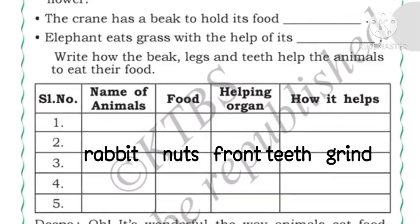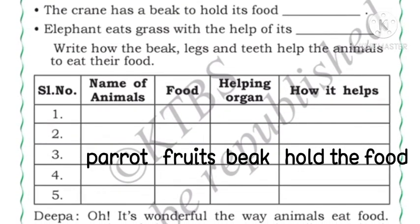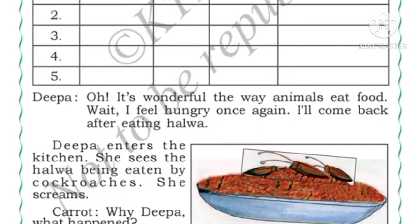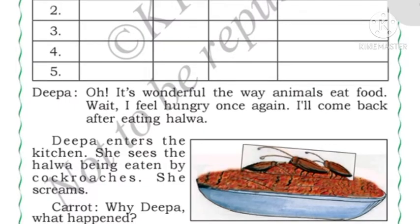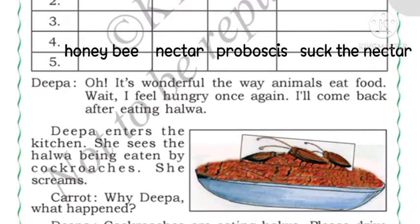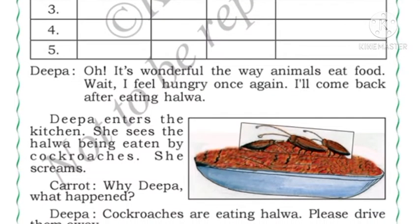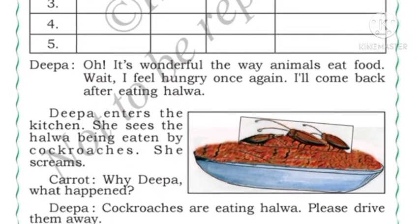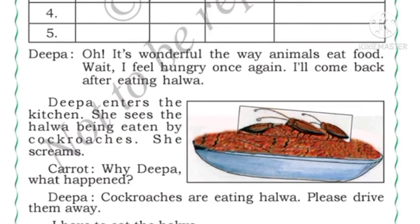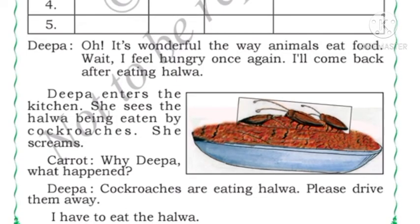Parrot — food: fruits and vegetables; helping organ: beak; how it helps: to hold the food. Honeybee — food: nectar; helping organ: proboscis — like a butterfly, the honeybee also has a tube-like organ to suck nectar; how it helps: to suck the nectar. Cow — food: grass; helping organ: teeth; how it helps: to chew the food. You can write whichever animal you want.